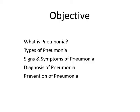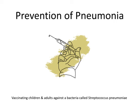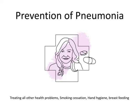Vaccinating children against a bacteria called Streptococcus pneumoniae leads to a decrease of these infections in children and, surprisingly, in adults as well, because many adults acquire this infection from children. A Streptococcus pneumoniae vaccine is also available for adults. Treating all other health problems such as HIV, AIDS, diabetes mellitus and malnutrition can also be useful in indirectly treating pneumonia, since pneumonia occurs due to a general lack of resistance in the human body.